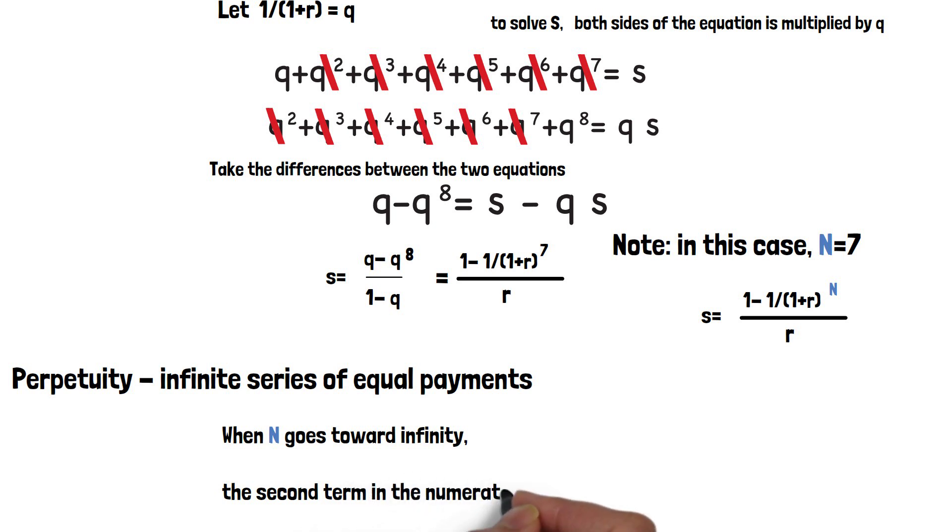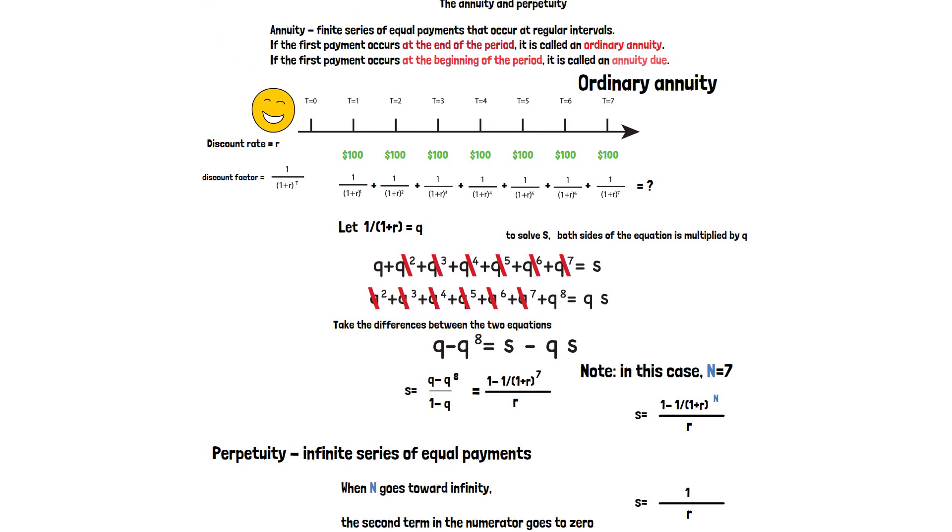The second term will go to zero when the n goes to infinity. So what's left for S is 1 over R. So that's how we get the present value of the annuity and perpetuity. I hope you find this helpful.